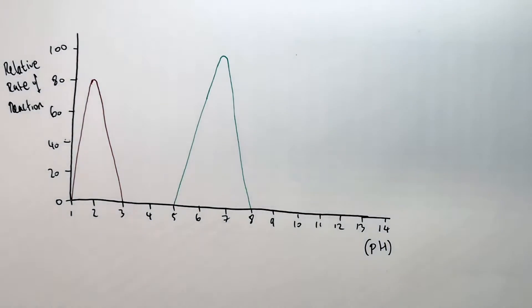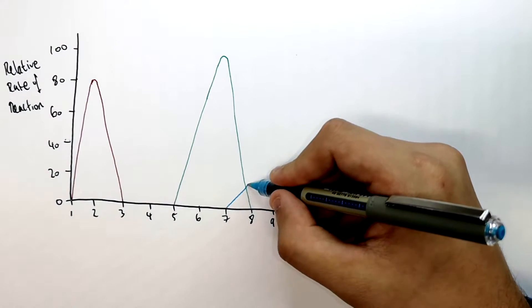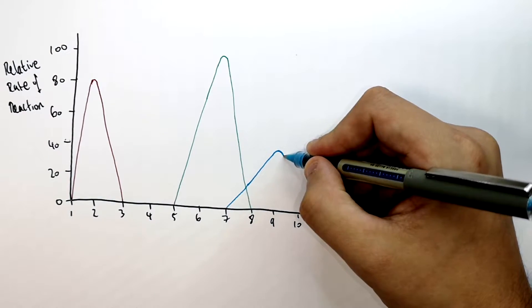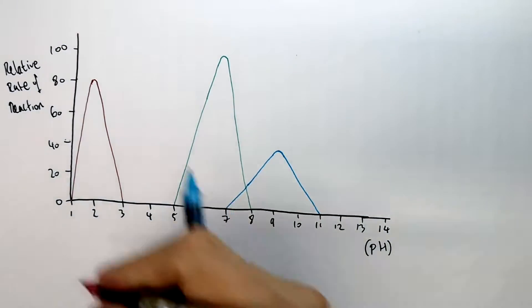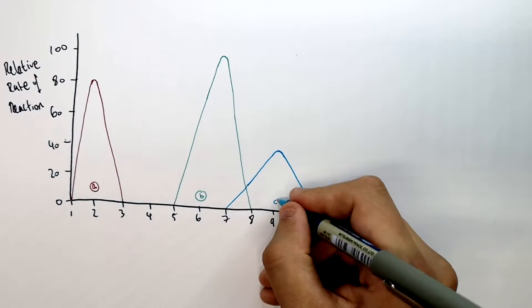You've got three enzymes here. The three lines represent three different enzymes and how they work at three different pHs: enzyme A, enzyme B, and enzyme C.